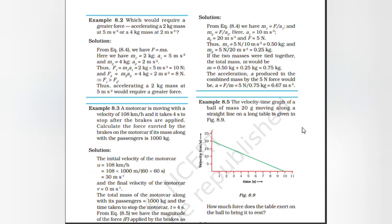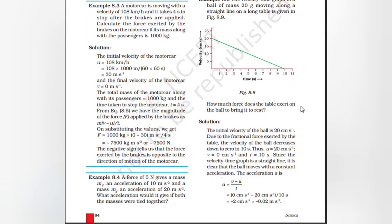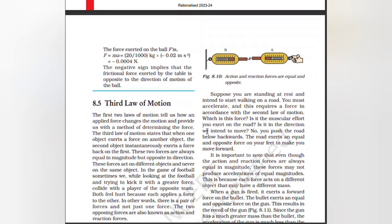A ball of mass 20 grams moves along a straight line on a long table. How much force does the table exert on the ball to bring it to rest? Initial velocity u = 20 cm/s; due to frictional force the velocity decreases to 0 in 10 seconds. Since the velocity-time graph is a straight line, the ball moves with constant acceleration: a = (v − u)/t = (0 − 20)/10 = −2 cm/s² = −0.02 m/s². Force F = ma = (20/1000) × (−0.02) = −0.0004 N. The negative sign implies the frictional force exerted by the table is opposite to the direction of motion of the ball.